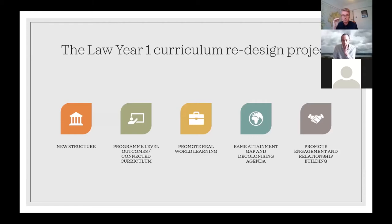We wanted to address the Black and minority ethnic attainment gap — nationally around a 15-point gap between the attainment of BAME and white students — and we had a significant proportion of BAME students in the law school. And probably most significantly, engagement: increasing problems even before COVID in relation to attendance and engagement. More commuting students, more doing part-time work, the availability of recorded materials, and digital distractions — students physically present but without a learning presence in the classroom — contributing to a sense of isolation and alienation from their studies.